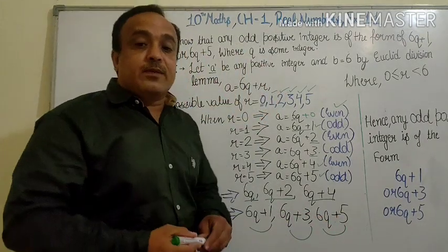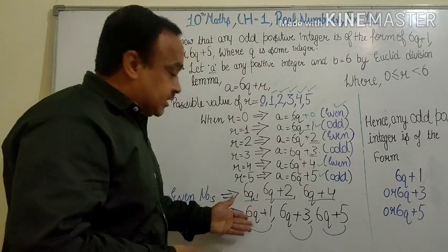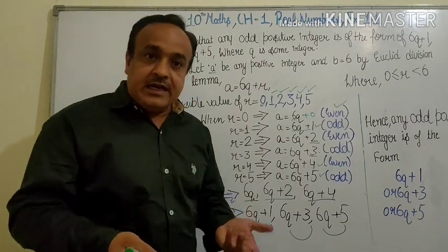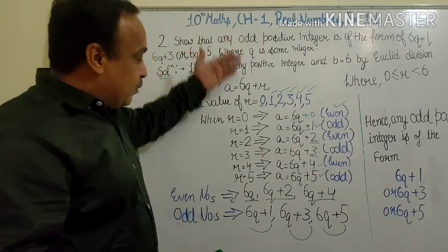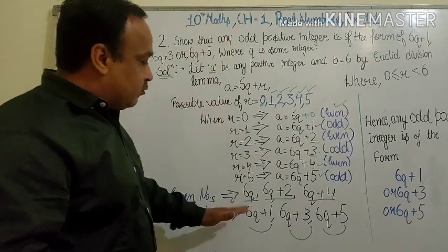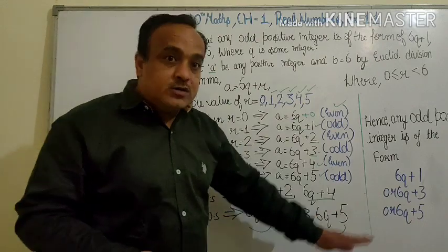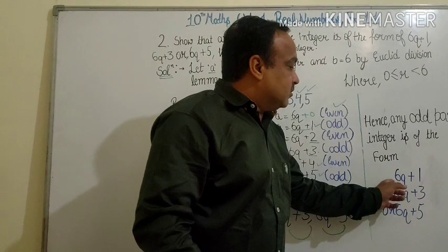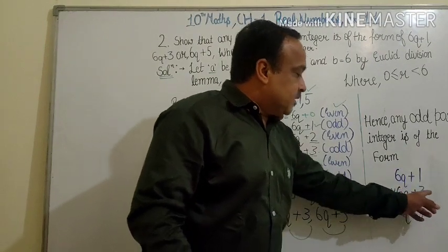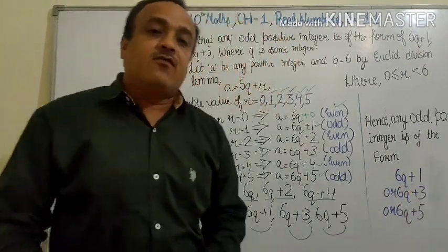So we can see our odd numbers are 6q+1, 6q+3, and 6q+5. This means we have proved that any odd number must be in this form. Hence, any odd positive integer is of the form 6q+1, 6q+3, or 6q+5.